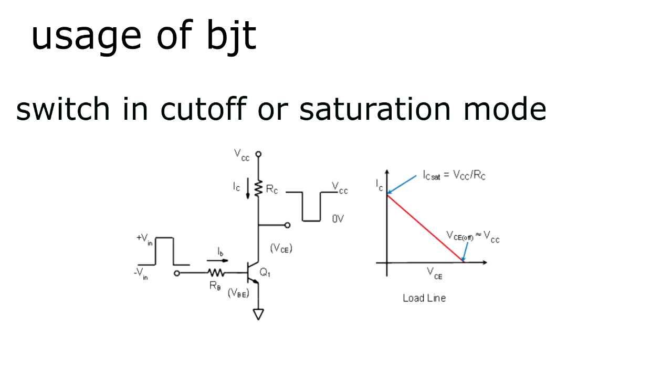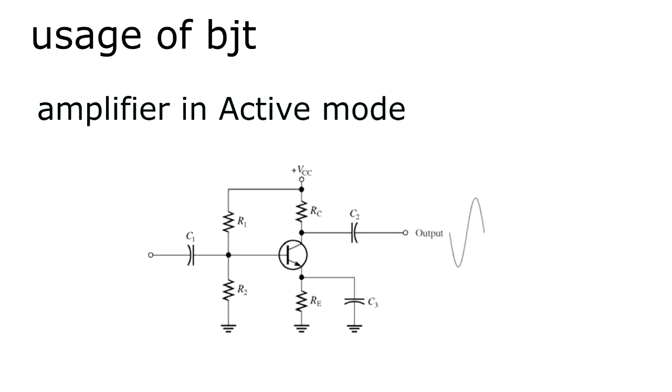Now we are going to talk about the usage of transistor. It can work as a switch. Well yeah, we can use it as a controller in the circuit by making it in cutoff or saturation mode only, as shown in the picture. The second usage of transistor is amplification.